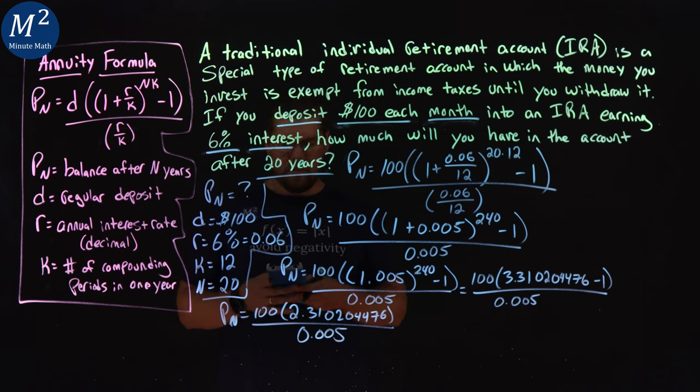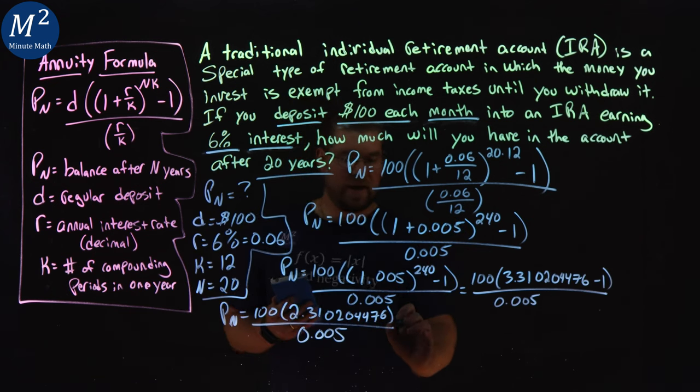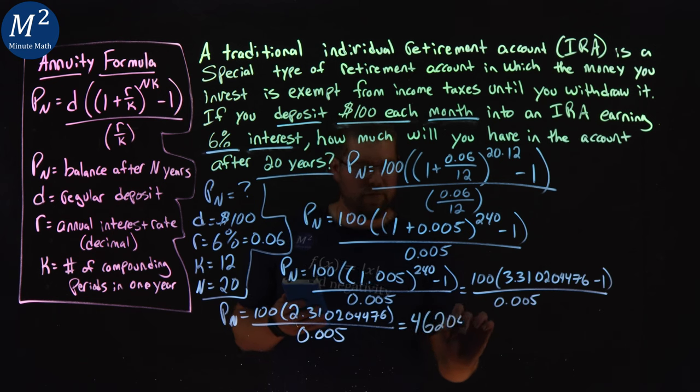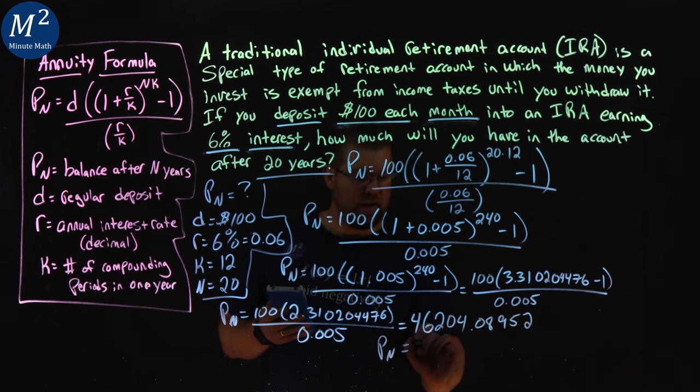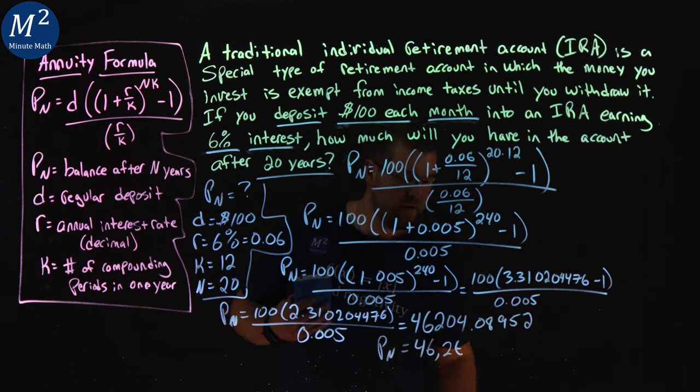All right. So now we're at a point where you probably can multiply it all out. We take the top number, times it by 100, moves the decimal place over two spots, and then divide by 0.005. And that gets me a decimal value of 46204.08952. And if you round that, P sub n is 46204.09. 0.089 rounds to 0.09.